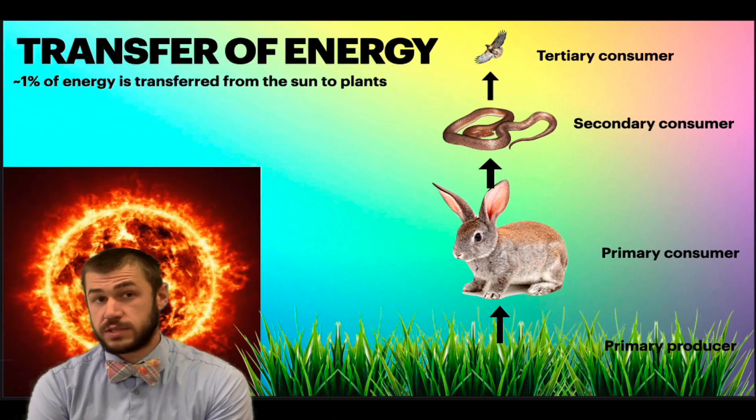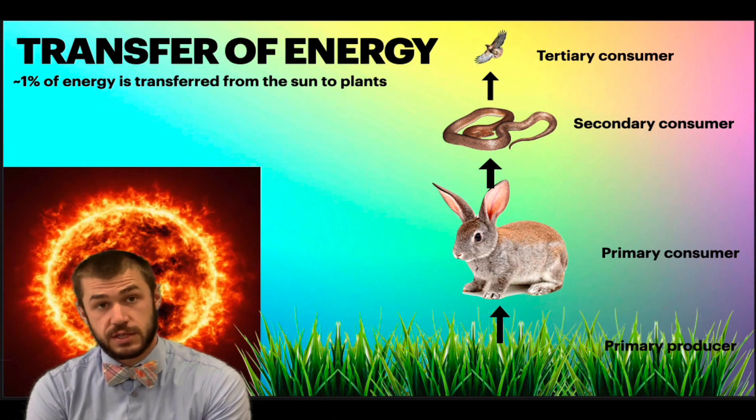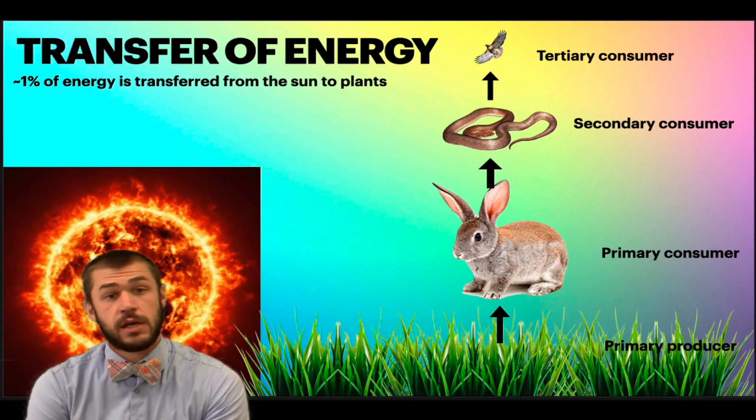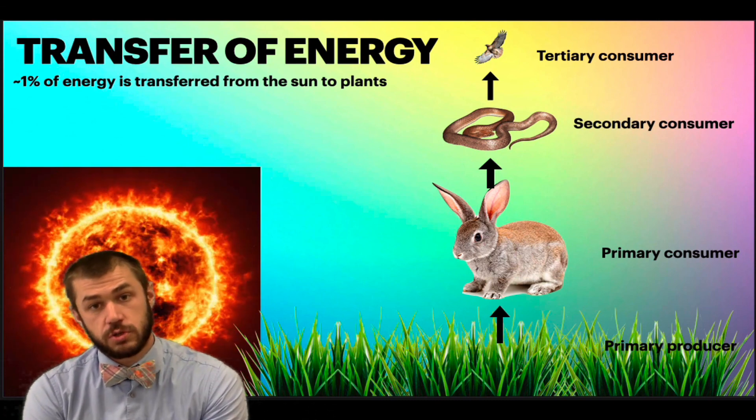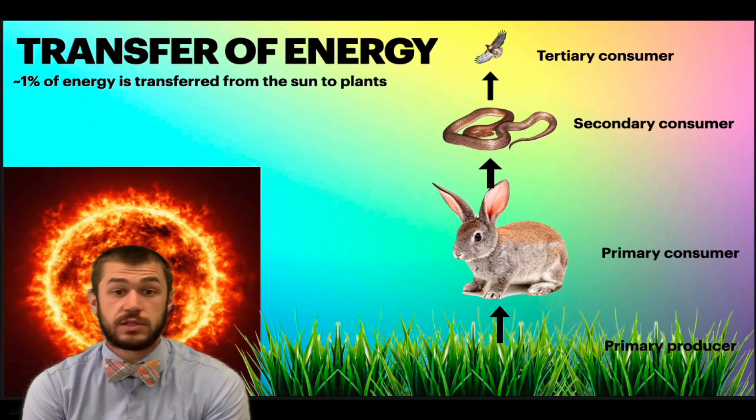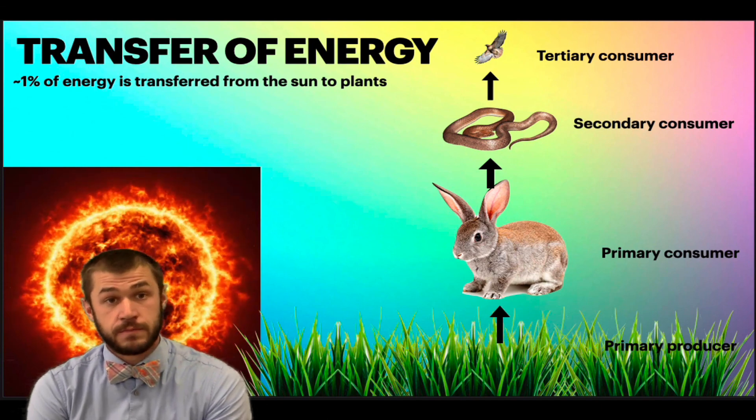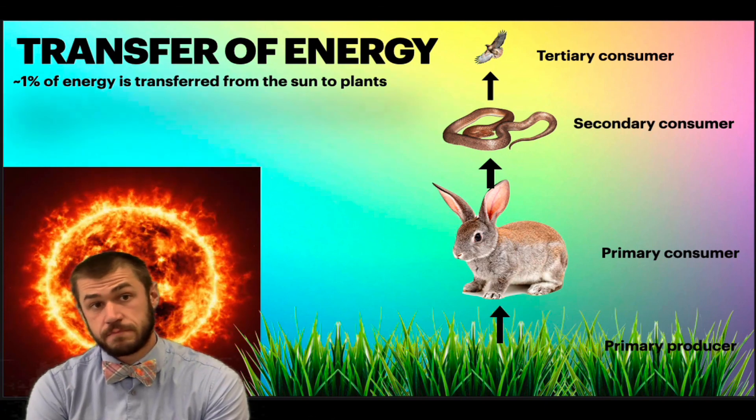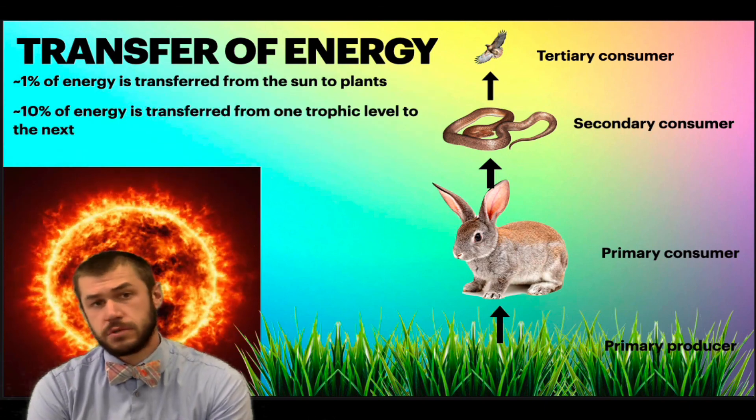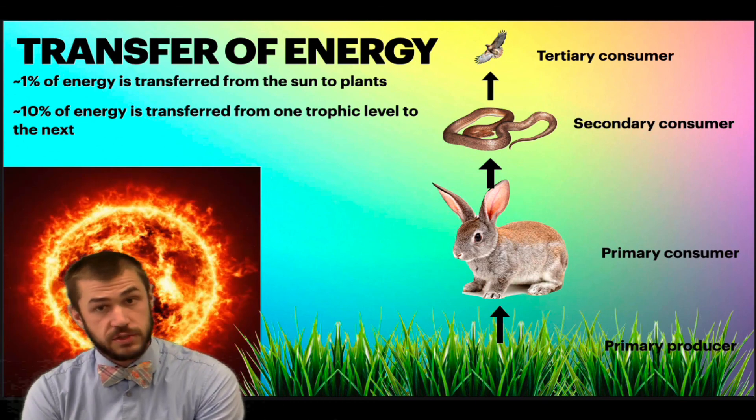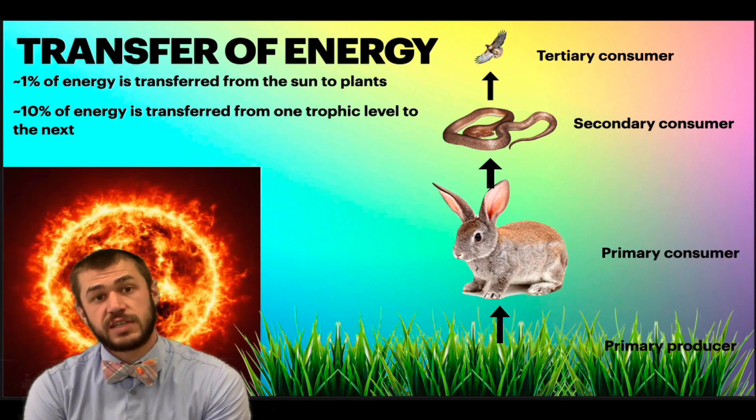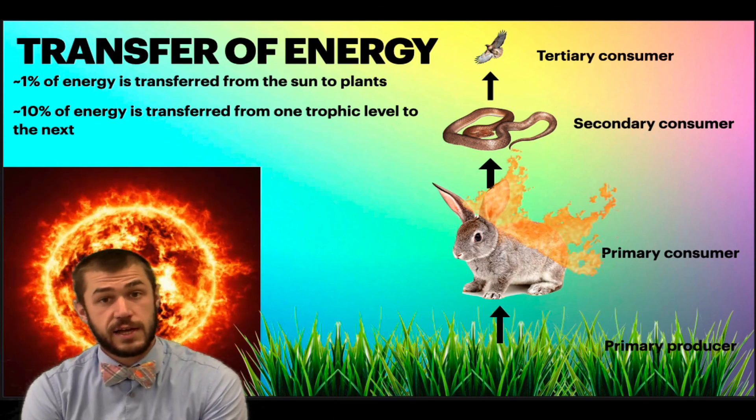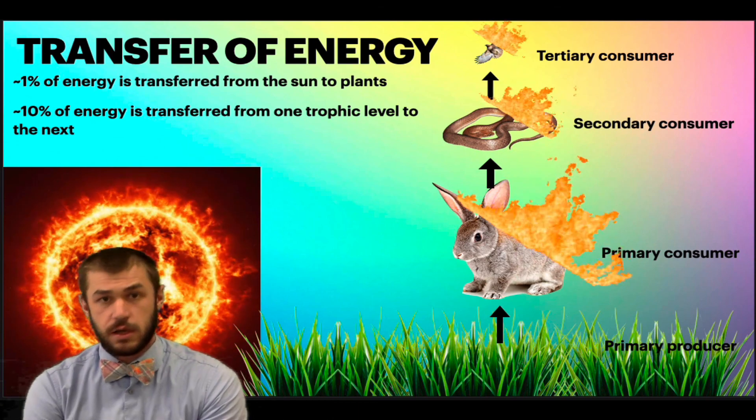But only 1% of the energy is transferred from the sun to the plant. So all of the energy that's going to hit that grass, only 1% will actually be absorbed and turned into the sugars that are eaten by the rabbit. The rest is going to be reflected off or lost as heat. Similarly, only 10% will be transferred from one trophic level to the next. So from the grass to the rabbit, only 10% is maintained, and the same all the way up. And the rest of that energy is going to be lost as heat.